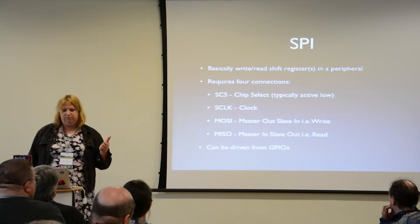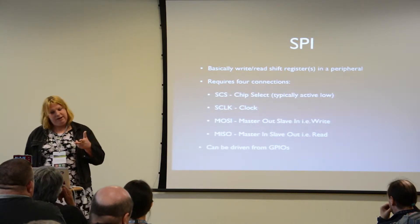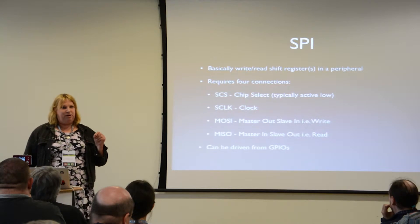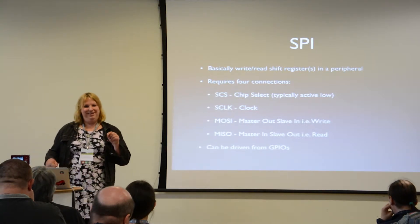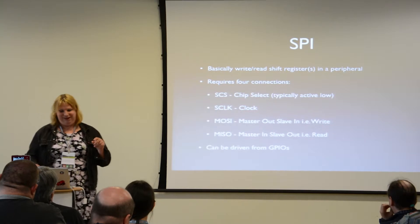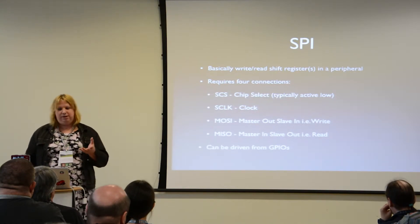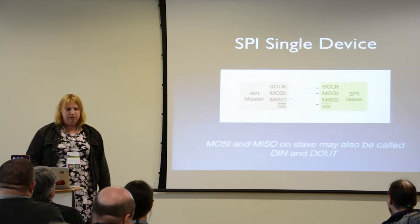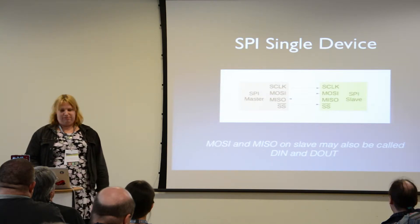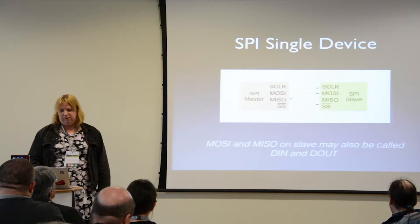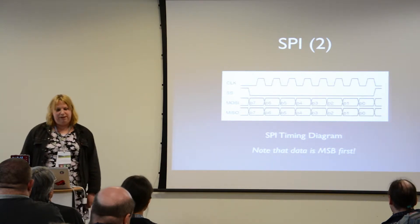SPI uses a clock, typically active, and chip select, typically low. MOSI is master out, slave in. If you look at a client chip, it will also say MOSI, meaning it's the input on the client because it's the slave, not the master. And MISO is master in, slave out. Because it's pretty simple, you can actually implement it in software just using GPIOs. Connect MOSI to MOSI and MISO to MISO — you might also see it as data in and data out. The data is clocked in most significant bit first.